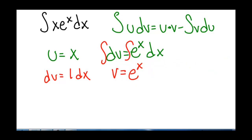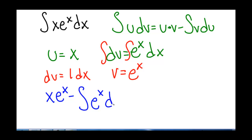Putting this back into our formula, we get u times v — so x times e to the x — minus the integral of v du, where e to the x times du is just dx. So now we've gotten something simpler. The integral of x e to the x dx equals x e to the x minus the integral of e to the x dx.